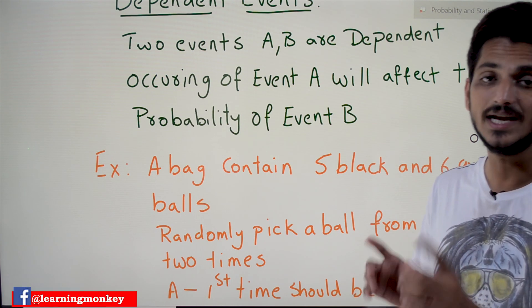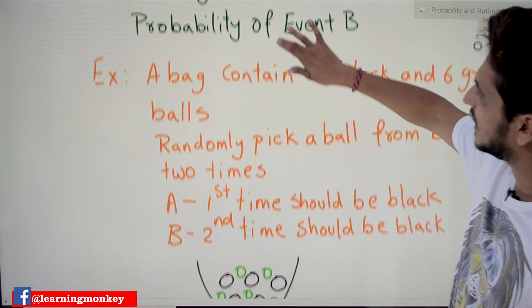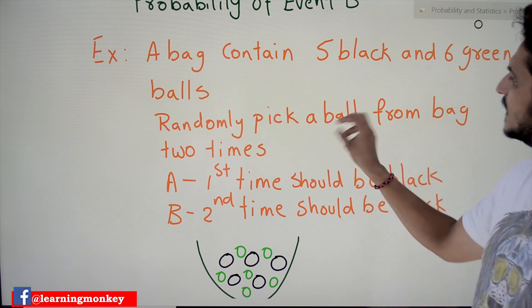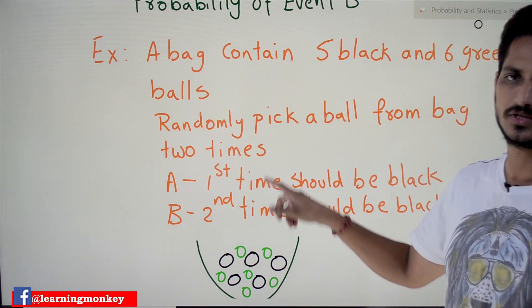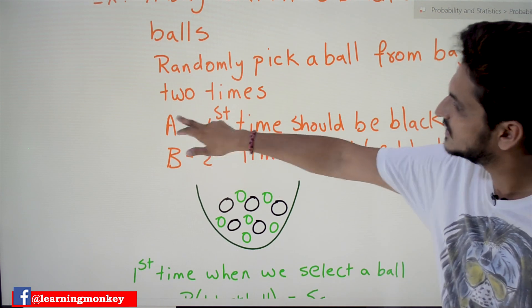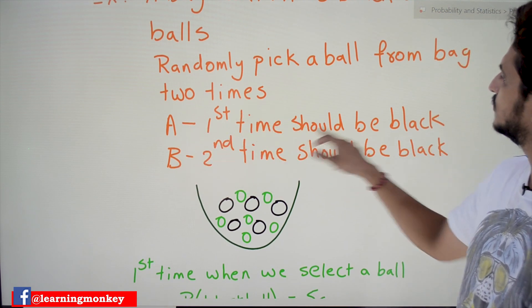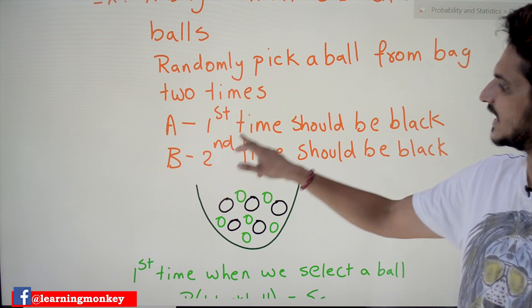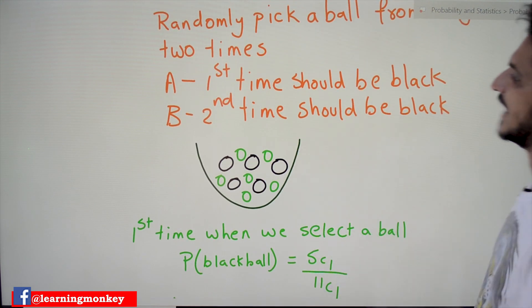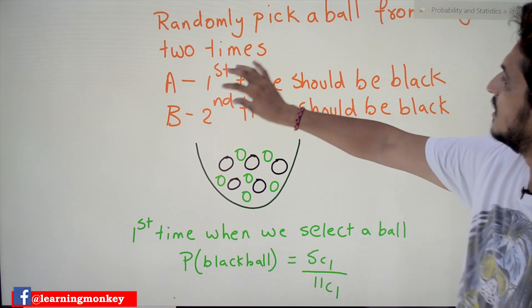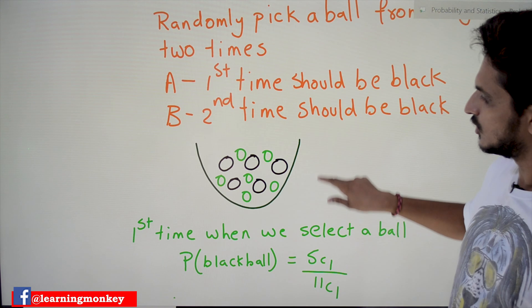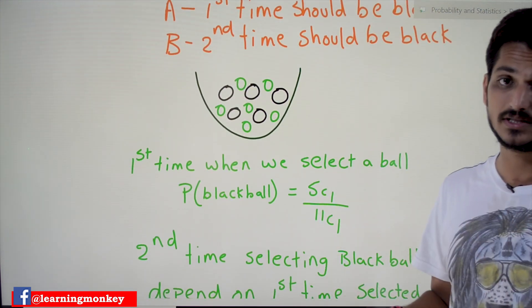With an example you will get clarity. A bag contains five black balls and six green balls. Randomly pick a ball from the bag two times. Event A says the first pick should be a black ball; event B says the second pick should be a black ball. First time, how many balls are there total? 5 plus 6 = 11 balls. Total combinations are 11C1, so our sample space is 11C1.